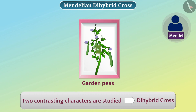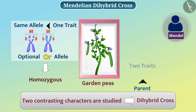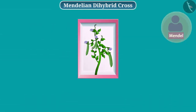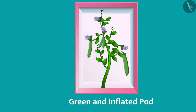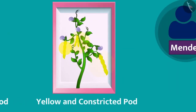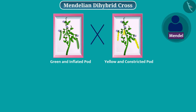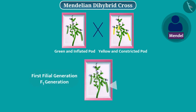Organisms that have the same allele for a trait are homozygous for that trait. Parents taking part in dihybrid cross are homozygous for two traits. In a dihybrid cross, Mendel selected two homozygous plants. In one, the pods were green in colour and inflated, and in the second plant, pods were yellow in colour and constricted. By crossing these, Mendel obtained seeds and grew the F1 generation. The pods of all plants of this generation were green and inflated.